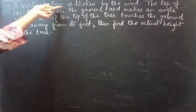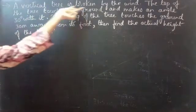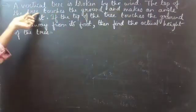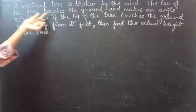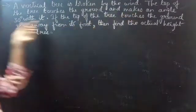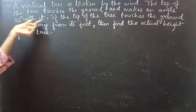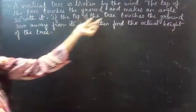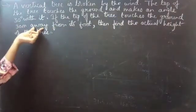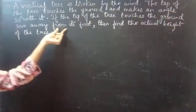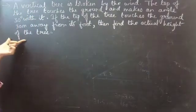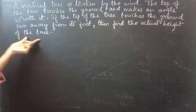A vertical tree is broken by the wind. The top of the tree touches the ground and makes an angle 30 degrees with it. If the top of the tree touches the ground 30 meters away from its foot, then find the actual height of the tree.